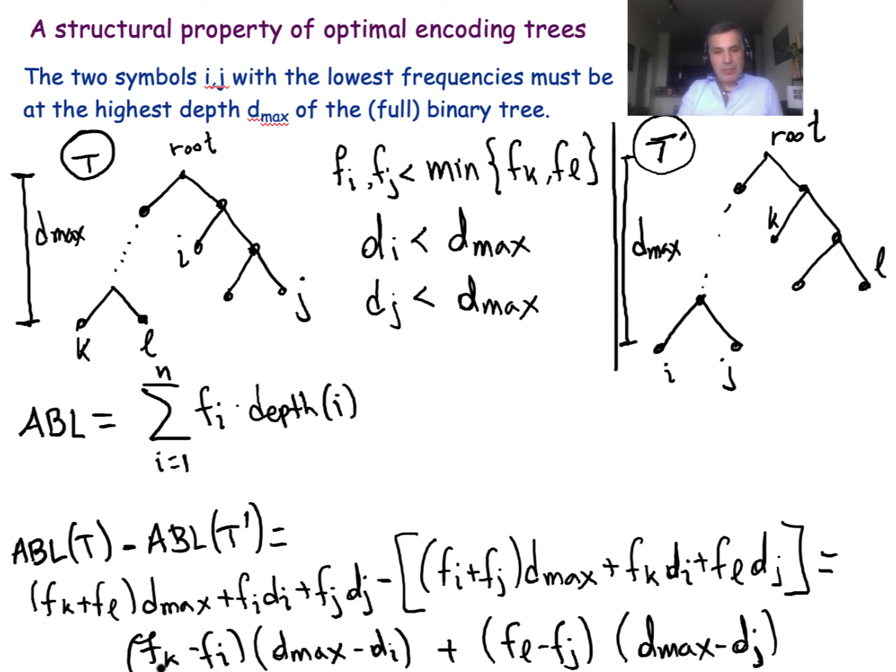So if I just apply algebra in this difference, I get the following. So just by rearranging the terms, I have the difference of these two frequencies, fk minus fi, which is positive - remember this inequality - times d max minus di, which is also positive, plus fl minus fj, which is also positive, times d max minus dj, which is also positive. So all of these are positive, which means that the difference between the average bit length of these two trees is positive. In other words, going from this tree to this tree after we apply our exchange argument, we reduce the average bit length of the tree. This proves that the symbols with the lowest frequency, they have to be at the bottom, at the maximum depth of the tree. If they are not, then we can always place them at the maximum depth and reduce the average bit length.